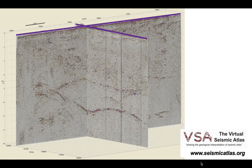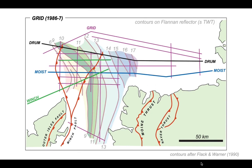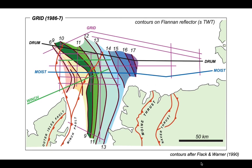That's what the BIRPS team did — going back to the map and building up contours on the Flannan event. These contours are in two-way time. The Flannan reflector is down at around 17 seconds when last seen, and it climbs all the way up to perhaps 10 seconds and over to 6 seconds as we get to the western side of the profile. The general trend of the Flannan reflector is north-south, but as we go to the north, its strike swings round to northwest-southeast. This was the first three-dimensional mapping of a mantle structure — quite remarkable.